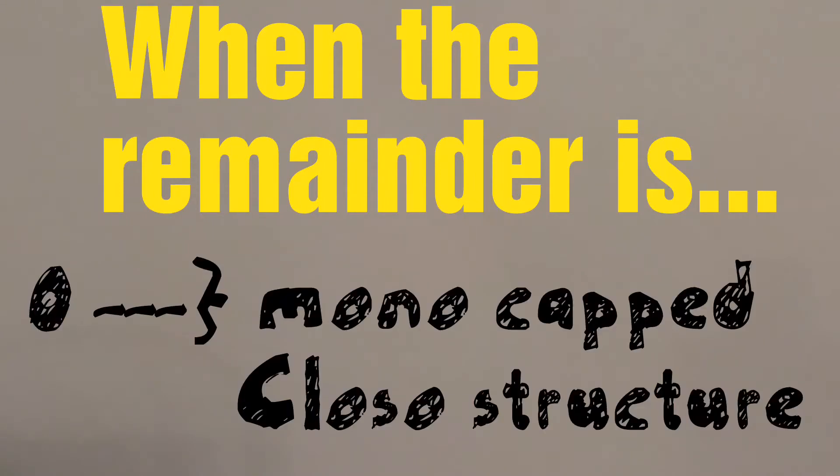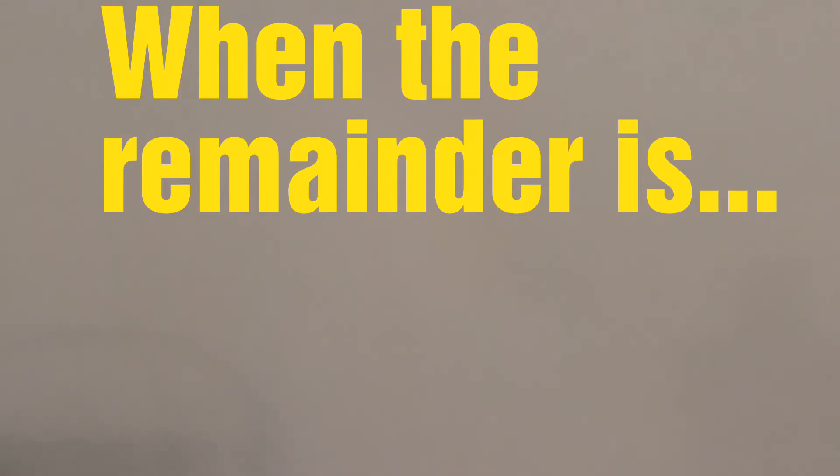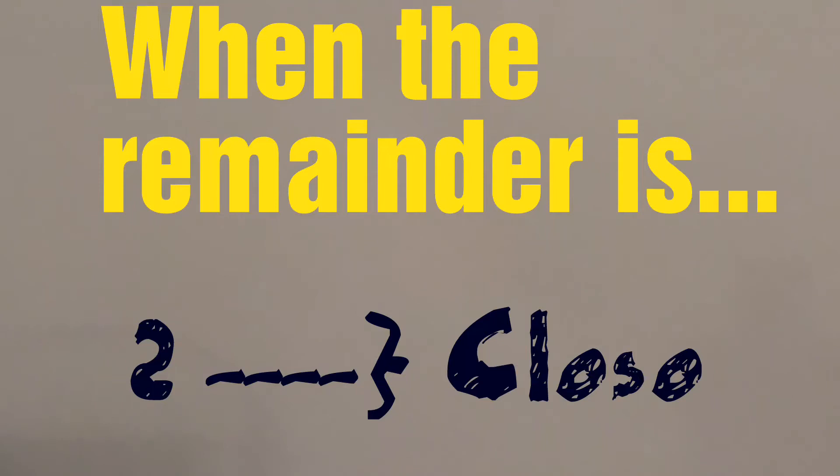When the remainder is 0, the structure is mono-capped closo structure. When the remainder is 2, it will be closo structure.